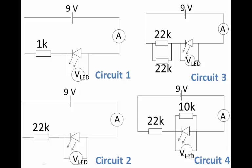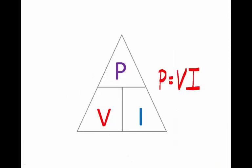Now in the practical we're going to do, we are going to build these four circuits and calculate the power dissipated through each of the four LEDs. We're going to use the formula power equals V times I, so we're going to measure the voltage across each LED and the current strength through each LED, multiply these, and find the power dissipated through each LED. The one that shines the brightest will have the greatest power dissipated through it.